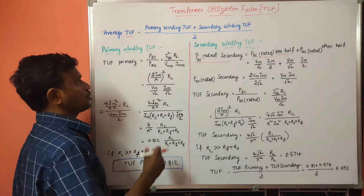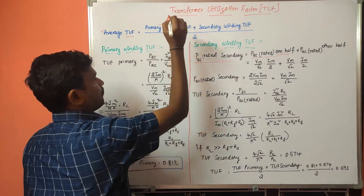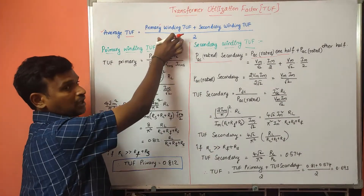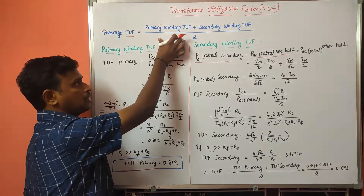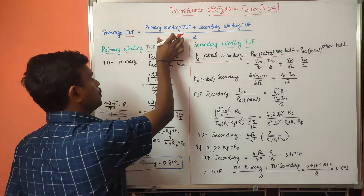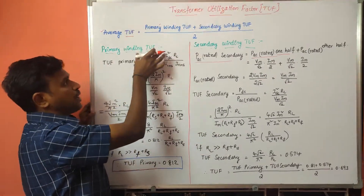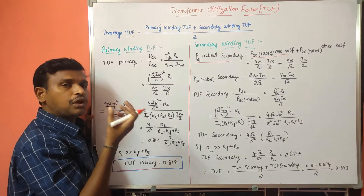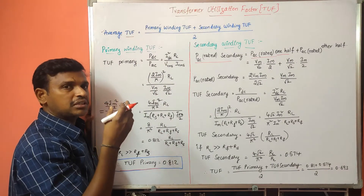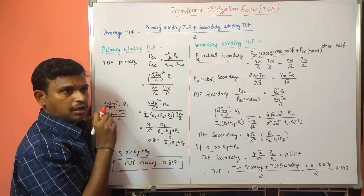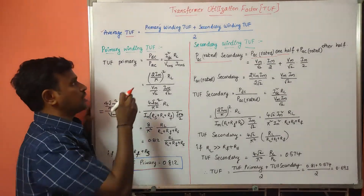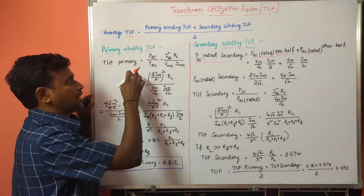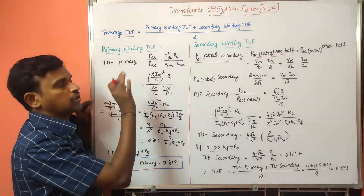That is why here we will calculate the primary winding transformer utilization factor and at the same time the secondary winding utilization factor, and we will take the average value of them to get the transformer utilization factor for the full wave rectifier. So average TUF is equal to primary winding TUF plus secondary winding TUF divided by 2. For the primary winding, the current flows for 360 degrees.